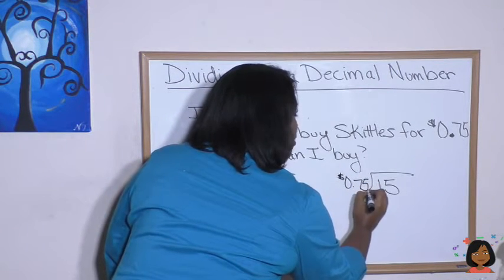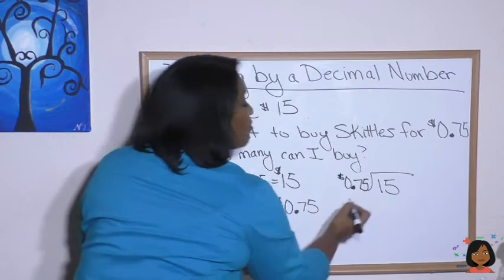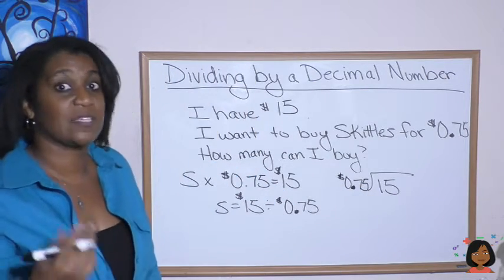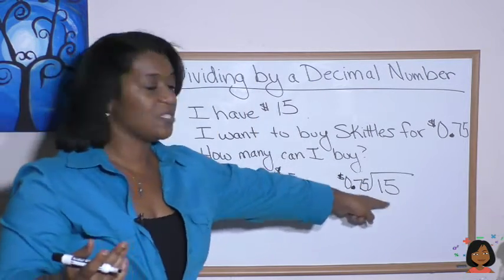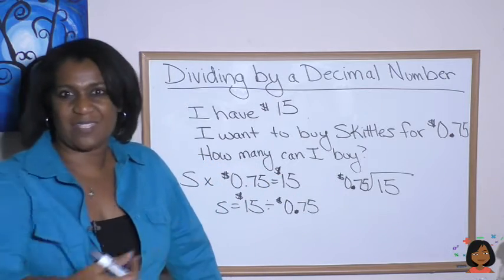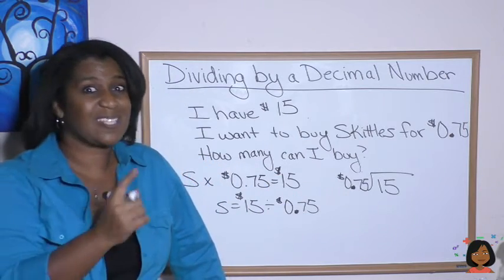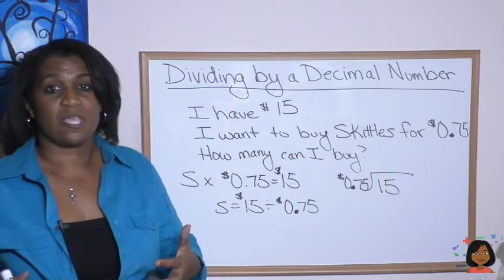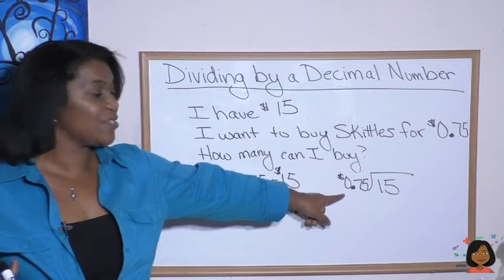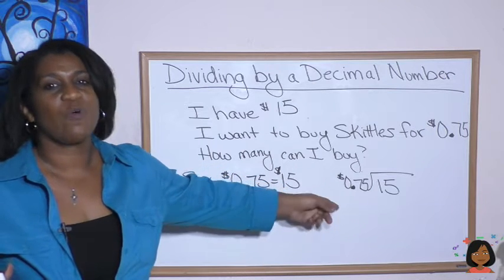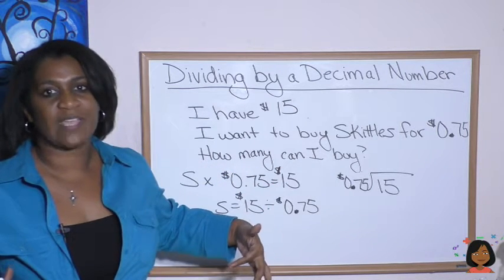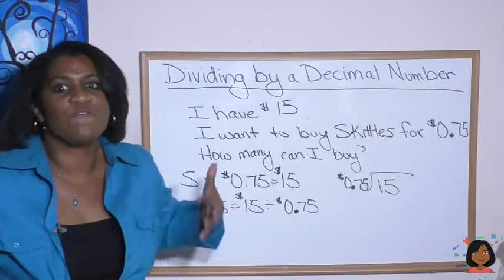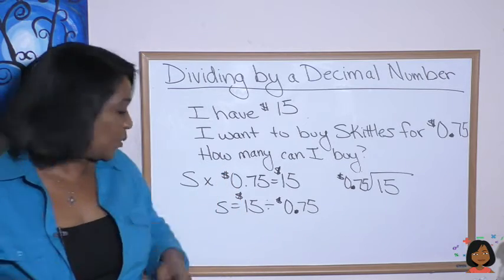Now, you should notice we have not done this kind of problem before. It's new. Usually we're used to seeing the decimal as the dividend in the inside, but the decimal is on the outside. And that's very important. Here's what it means. So in math, we cannot do division like this with that decimal on the outside. We have to kind of remove that decimal. And here's how we do it.